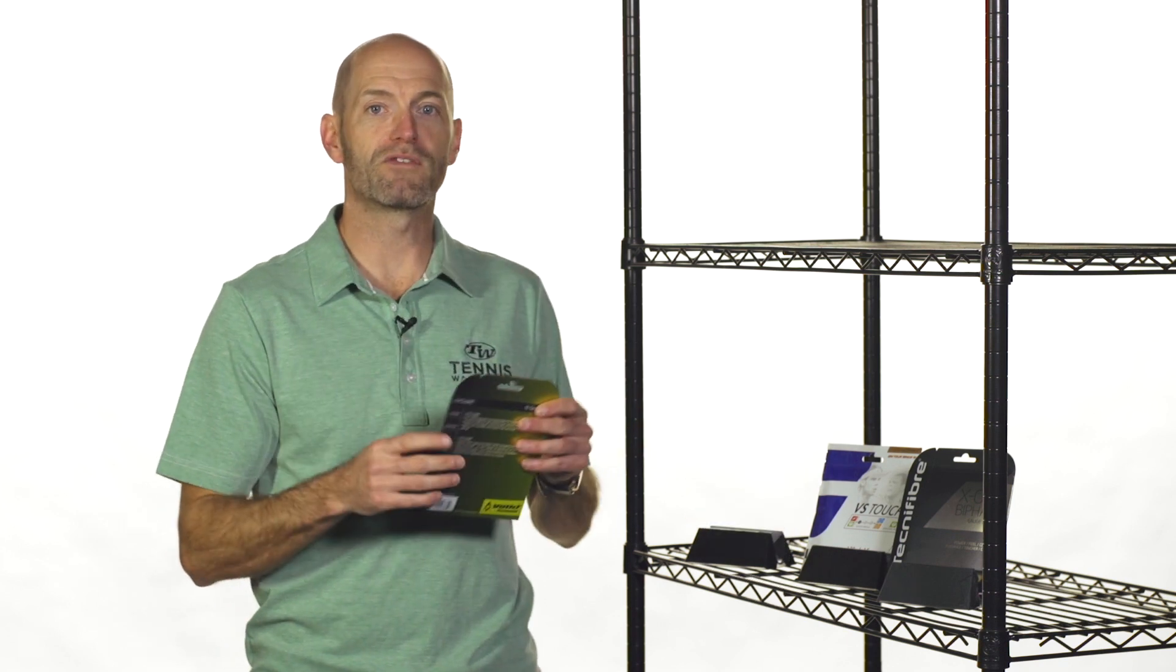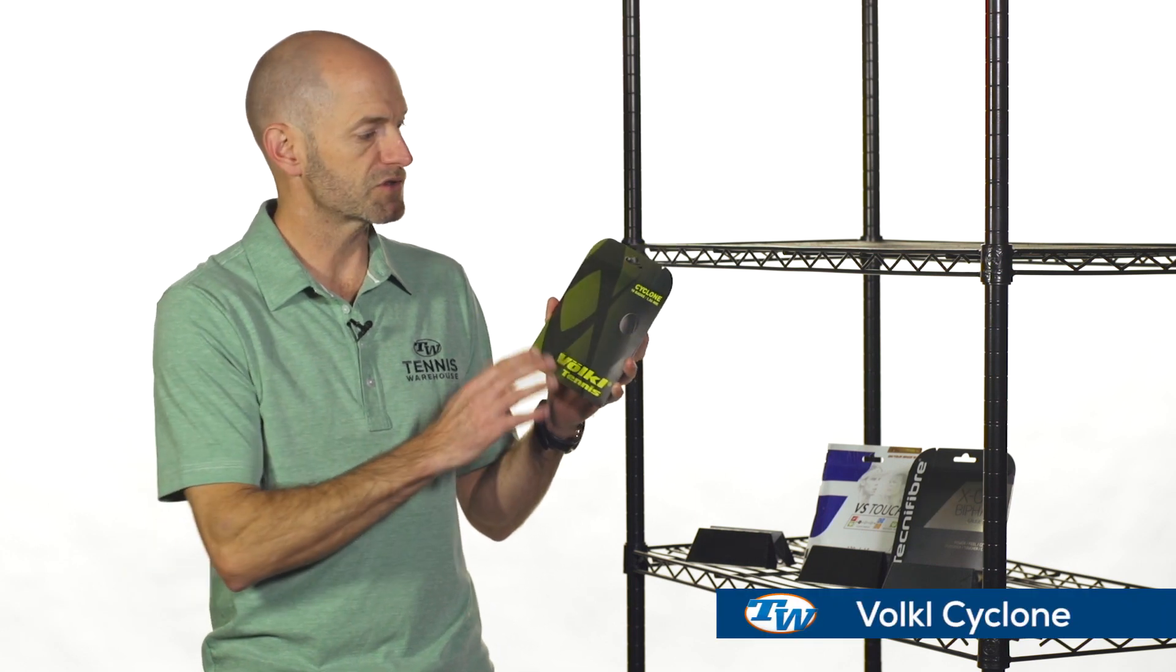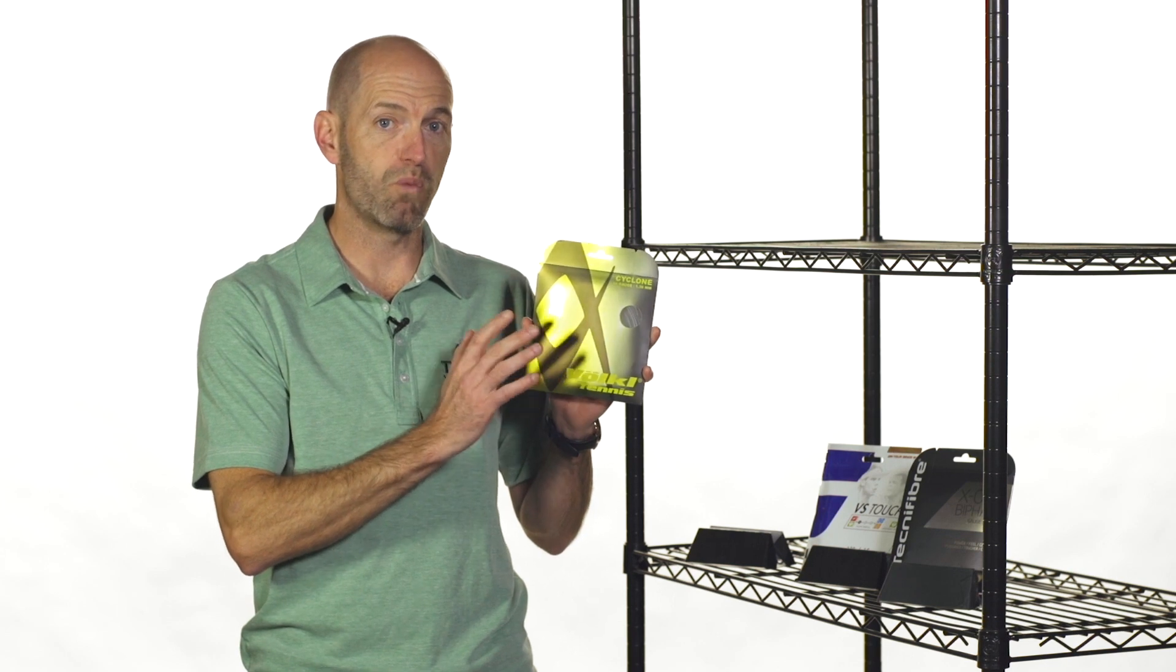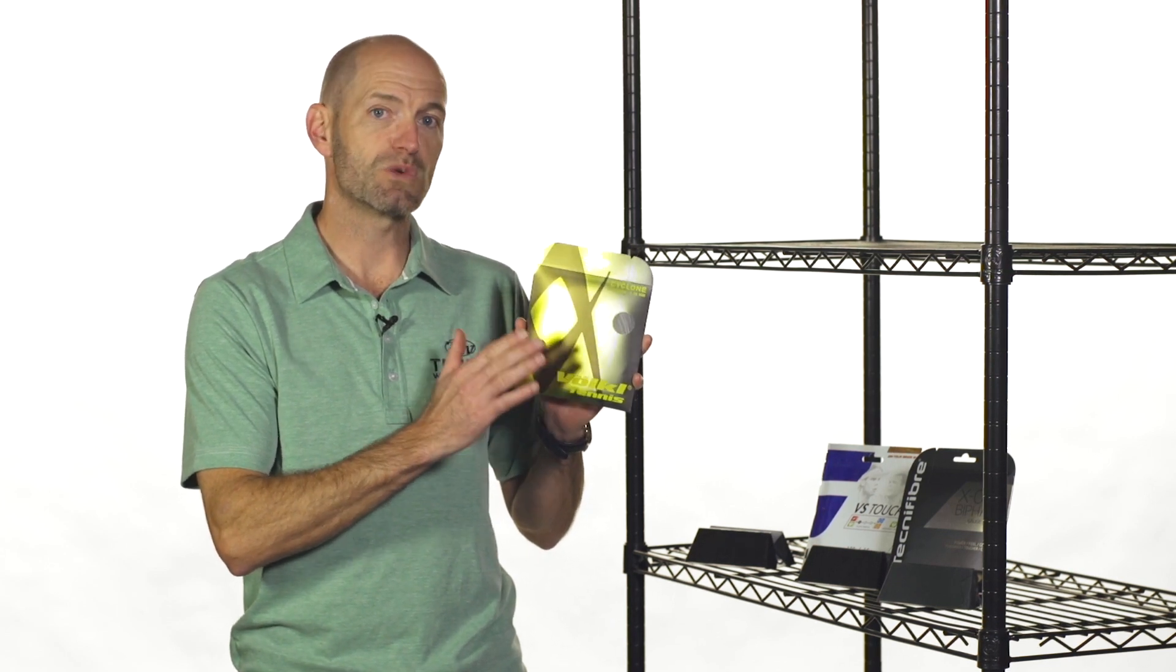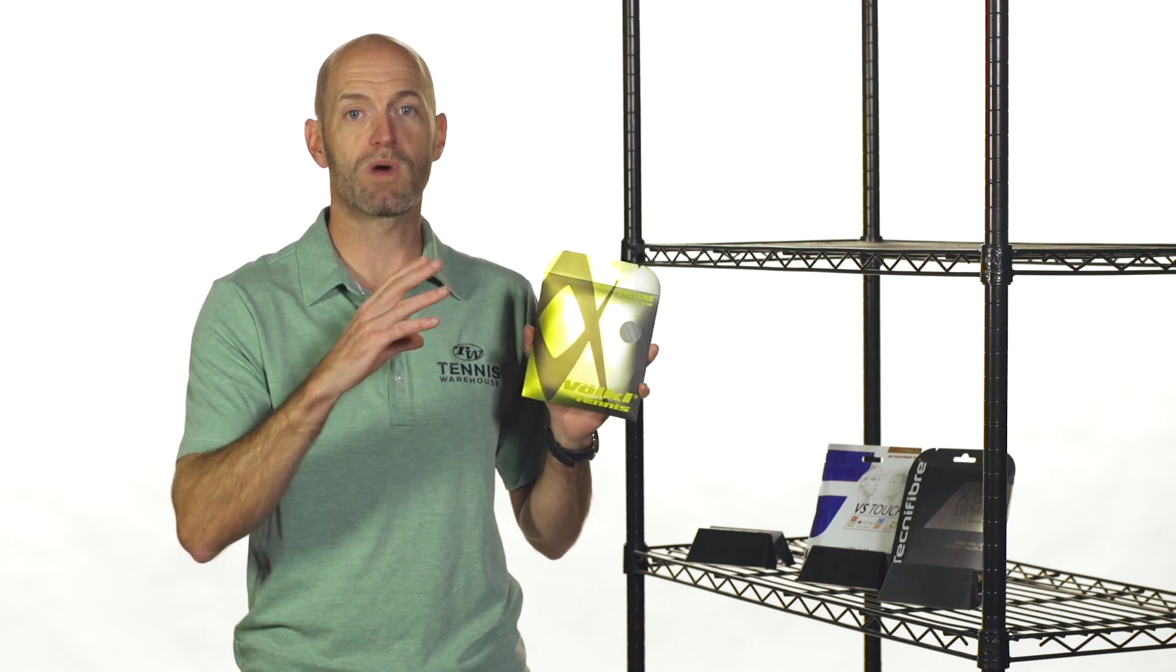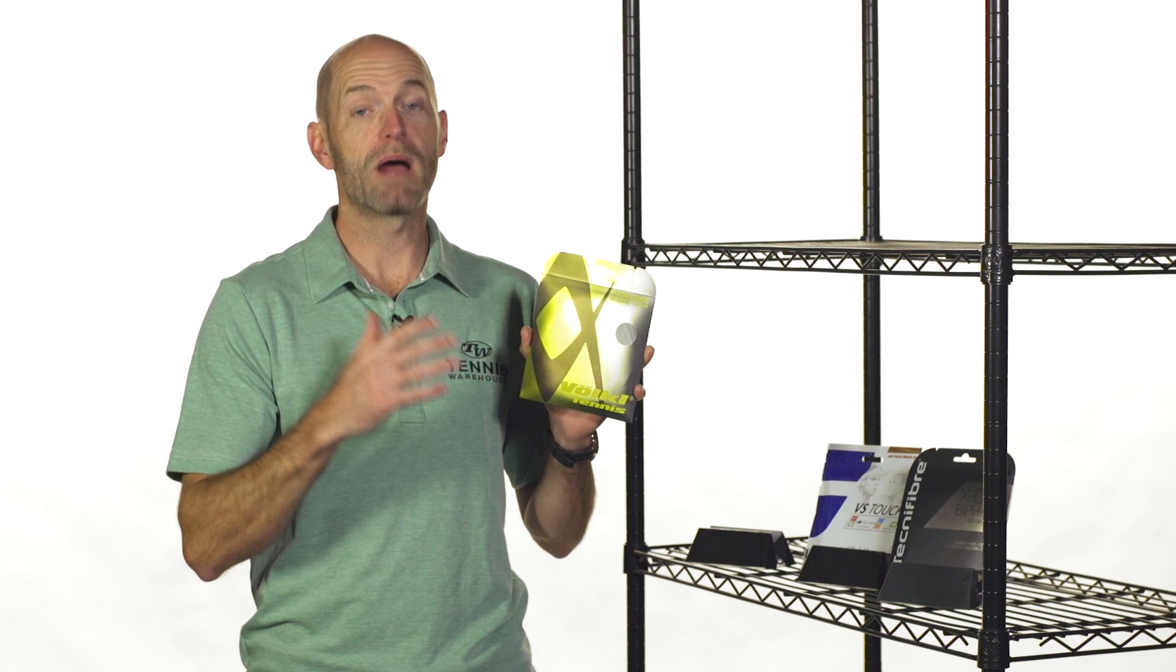Now the stiffness number of a string is going to tell you a lot about its playability. It's the most important variable really when it comes to the playability of a string. I have one of my favorite strings right here. It is actually my favorite string. This is Luxilon Cyclone in 16 gauge, and this has a string stiffness number of 197. So I know when I look at that number, other strings are going to fall within maybe a 20 or 30 point scale of that. I'm also going to probably like the playability of those strings.